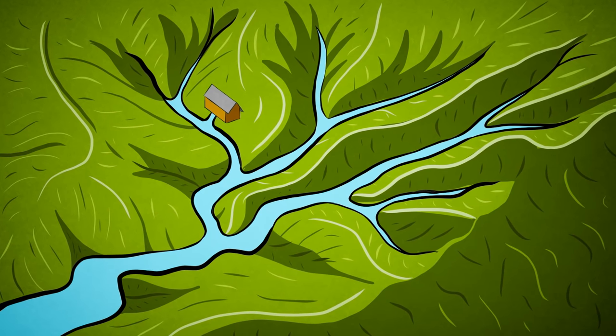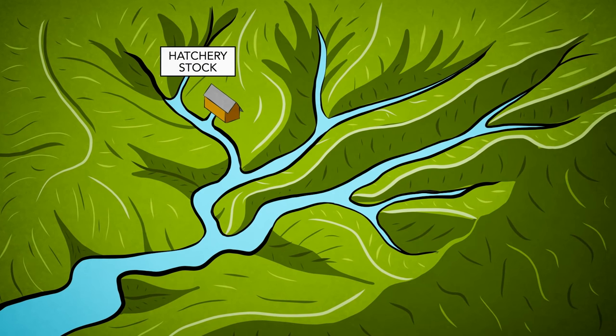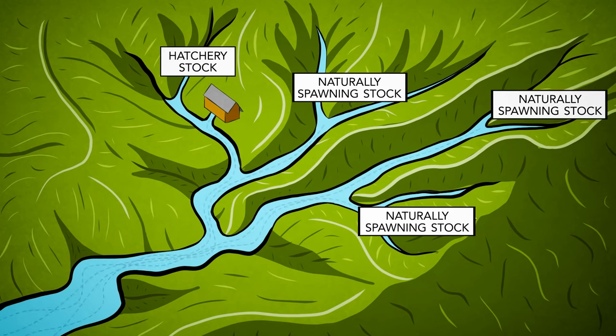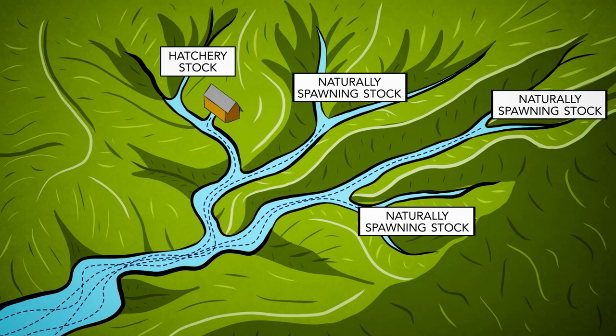A great way to understand hatcheries is to simply view them as a productive tributary within a watershed. But once these young salmon leave the hatchery, they still need the same quality of habitat as naturally spawning salmon to survive.